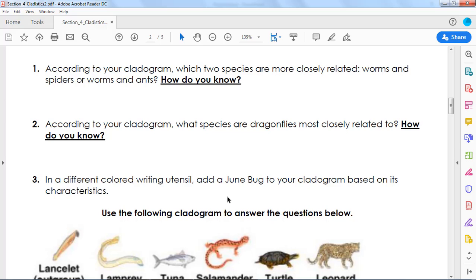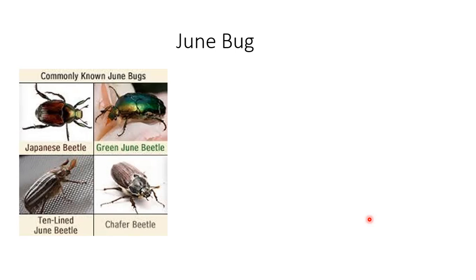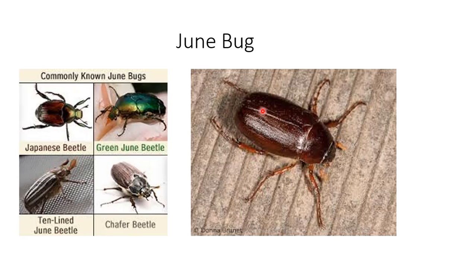So we're going to look at June bugs. What is a June bug? June bugs is a name given to a bunch of different bugs, so these could all be June bugs even though they are different species. A June bug close up basically looks like this — it has a hard outer shell, kind of like a ladybug.